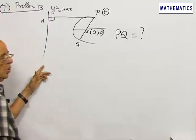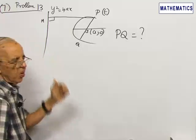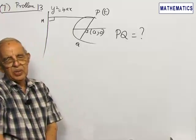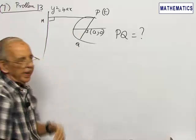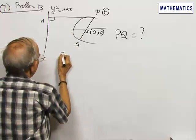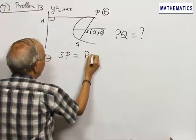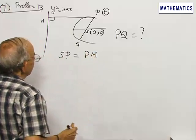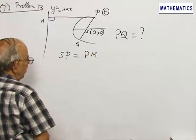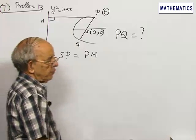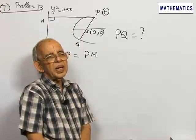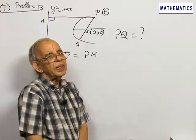From the focus directrix definition of a parabola, SP is equal to PM, where PM is the perpendicular from P on the corresponding directrix.